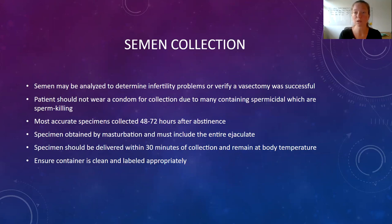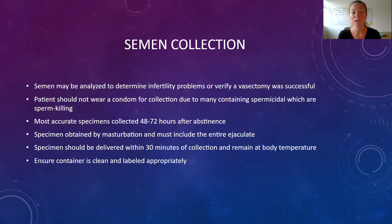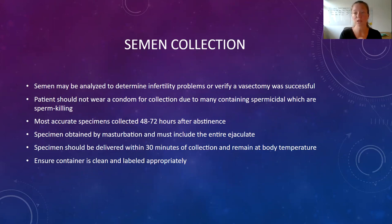Semen collection is something you might be responsible for instructing the patient on proper collection. Males produce sperm, and there are other substances in semen like fructose and different acids necessary for fertilization. Sometimes semen collection is done to figure out what's going on with infertility issues. It's also done after a vasectomy to confirm that it actually worked. The most accurate results are obtained after 48 to 72 hours of abstinence from any sexual activity. These specimens have to be kept at near body temperature and delivered to the lab within 30 minutes for testing.